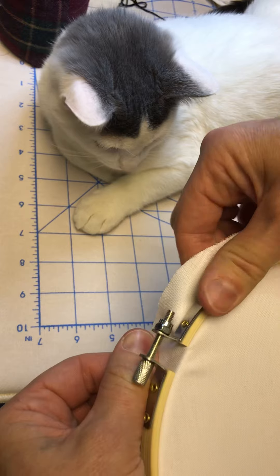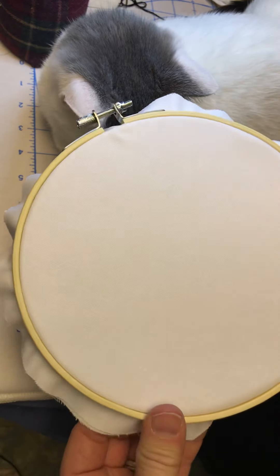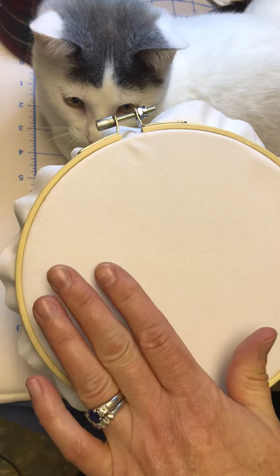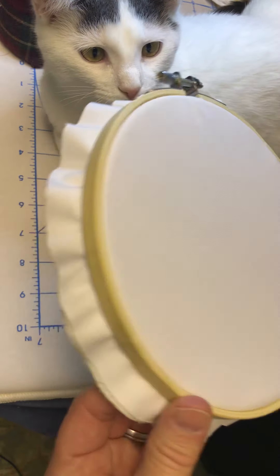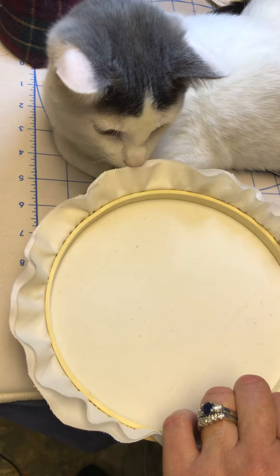All right, so there you go. There's your hoop nice and tight. And you're going to stitch, do all of your work on it, and then clean up any stitches on the back.